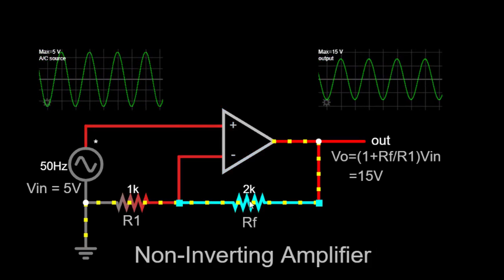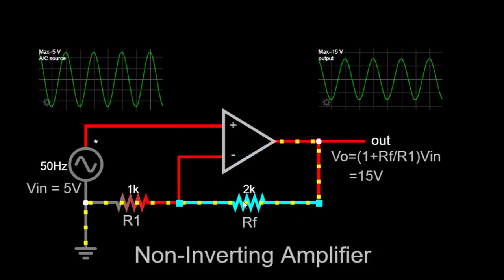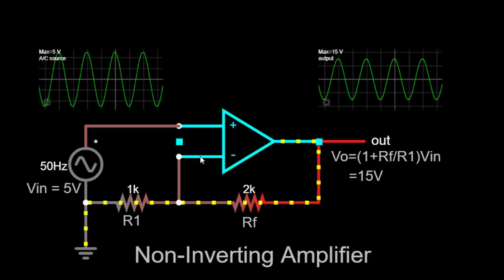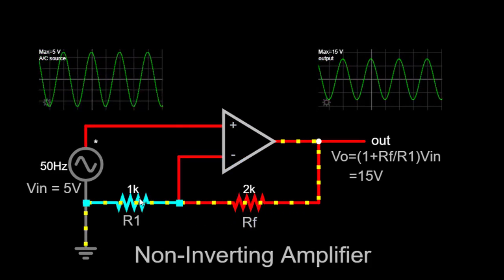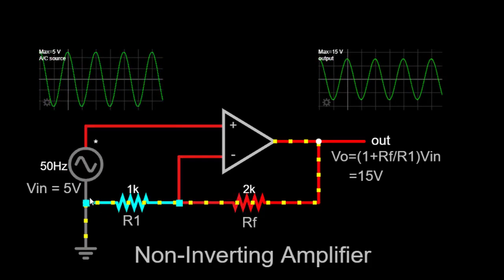The feedback resistor (Rf) is connected between the output and the inverting terminal, and the input resistor (R1) is connected between the non-inverting terminal and the input source.